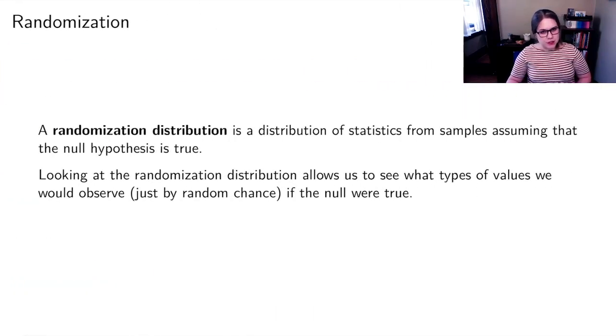Now I have this randomization distribution, which looks vaguely symmetric and bell-shaped. A randomization distribution is a distribution of statistics from samples assuming that the null hypothesis is true. Looking at the randomization distribution lets us see what kinds of values we could observe just by random chance if the null were true.